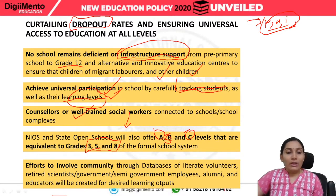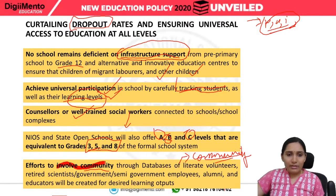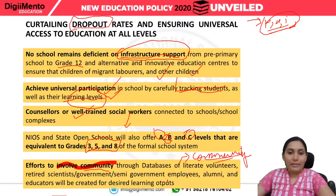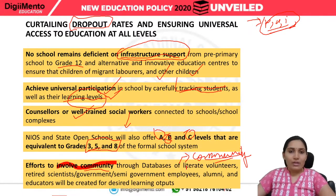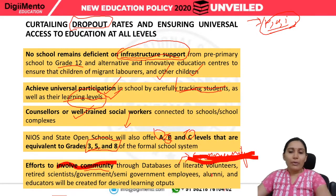Efforts will also be made to involve the community — that is community participation. Databases of literate volunteers, retired scientists, government and semi-government employees, alumni, and educators will be created for desired learning outputs. Please note all these points as they are important for your examination — the salient features of the New Education Policy.